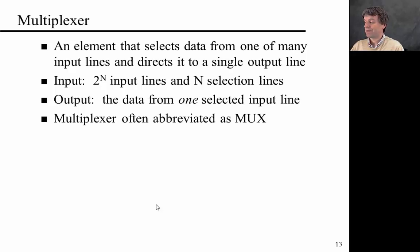So the last device that I want to introduce and by far the most important for building circuits going forward is the multiplexer. Of course we have seen examples of a 2-to-1 multiplexer already in the class and the lab but now I just want to do it a bit more generally. A multiplexer is an element that selects data from one of many input lines and directs it to a single output line. So the input again 2 to the n input lines and n selection lines, output the data from one of the selected input lines. And the multiplexer is typically abbreviated as MUX.